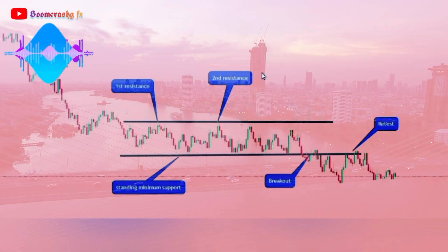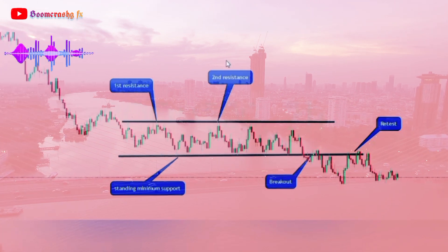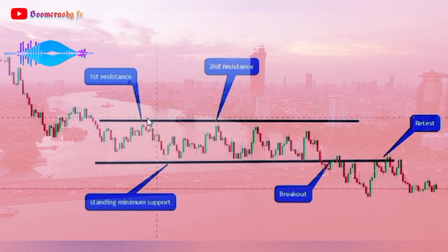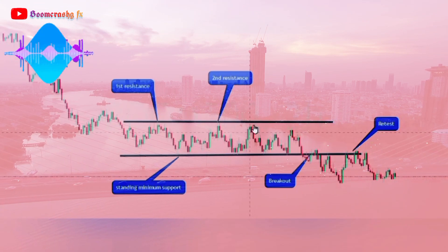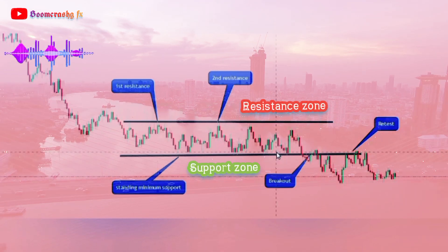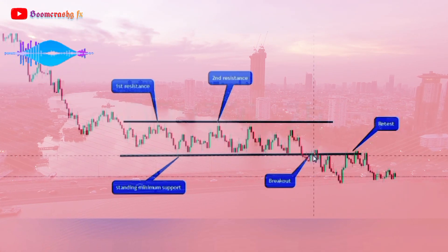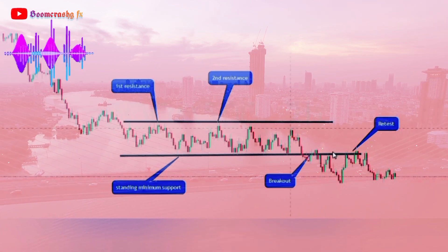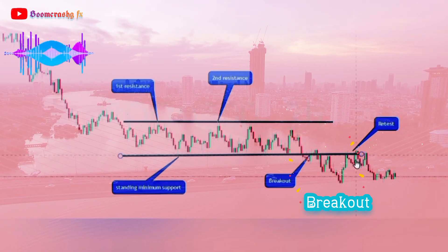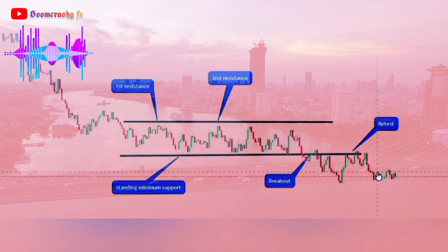All our requirements are complete on this market. We have a minimum of two resistances in place and a minimum of one support in place. Trading the inside of this market, we already have our two resistances and support — we can await a confirmation and a pullback to the support zone. This is the support zone and this is the resistance zone. Trading out of this market, once we have our breakout — here is the breakout — what comes next is the retest, and then we sell the market.